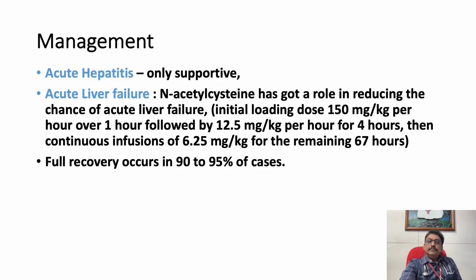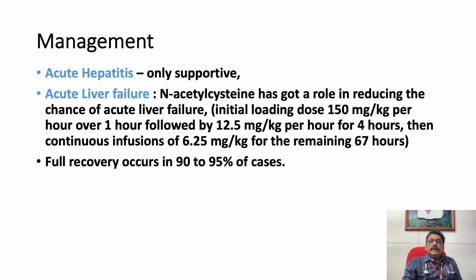Management: Most patients with Hepatitis B recover without major treatment; supportive therapy is the mainstay. In pulmonary liver failure, N-acetylcysteine and other supportive medications can be given. In acute liver failure, N-acetylcysteine dosing: initially 150 mg/kg/hour for 1 hour, followed by 12.5 mg/kg/hour for 4 hours, then a continued infusion of 6.25 mg/kg for the remaining 67 hours — similar to dosing in paracetamol poisoning — or simply 500 mg TID IV infusion. 90 to 95 percent of patients recover without any major issue.